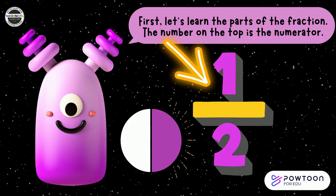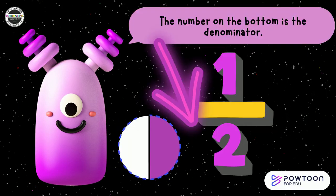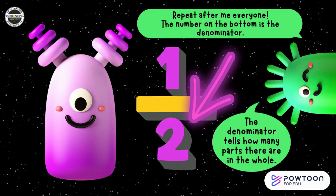The number on the top is the numerator. Repeat after me, everyone: the number on top is the numerator. The numerator tells how many parts there are. The number on the bottom is the denominator. The denominator tells how many parts there are in the whole.